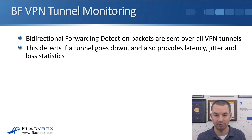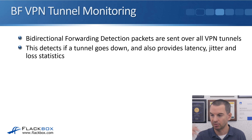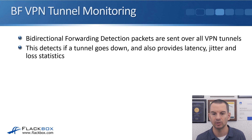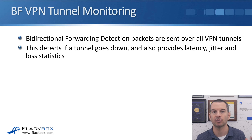Bidirectional Forwarding Detection, or BFD, packets are sent over each of those VPN tunnels to detect if a tunnel goes down. BFD packets are sent regularly over all links in both directions, so routers can detect if a link goes down and take it out of service until it comes back up. The BFD packets also provide latency, jitter, and loss statistics, which are used to direct packets for different applications over the most suitable connection.